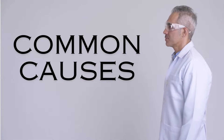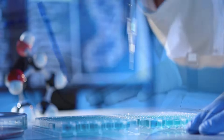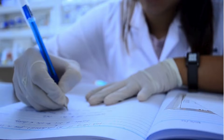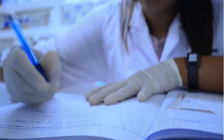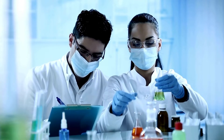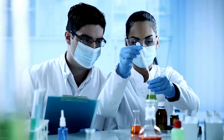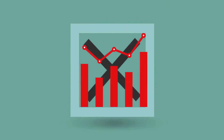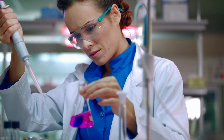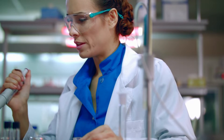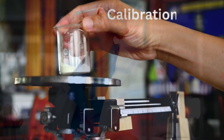Now, what are the most common causes of these errors in the lab setting? First up, we have human errors. Mistakes in technique or documentation lapses can introduce inaccuracies into our results. Imagine a researcher diligently conducting an experiment, but a simple procedural oversight or documentation mistake could lead to skewed data. These errors highlight the critical importance of precision and attention to detail in every step of the scientific process.